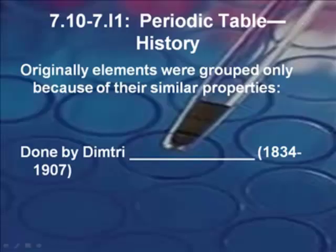Let's talk briefly now about the history of the periodic table. Originally elements were grouped because of their similar properties. This was done by a guy named Dimitri Mendeleev, M-E-N-D-E-L-E-E-V, if I'm not mistaken.